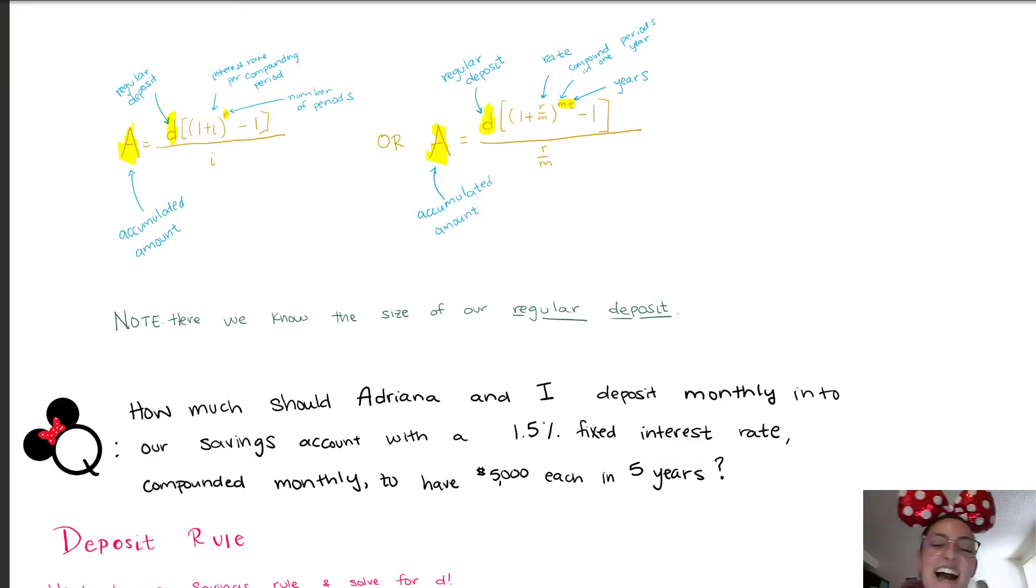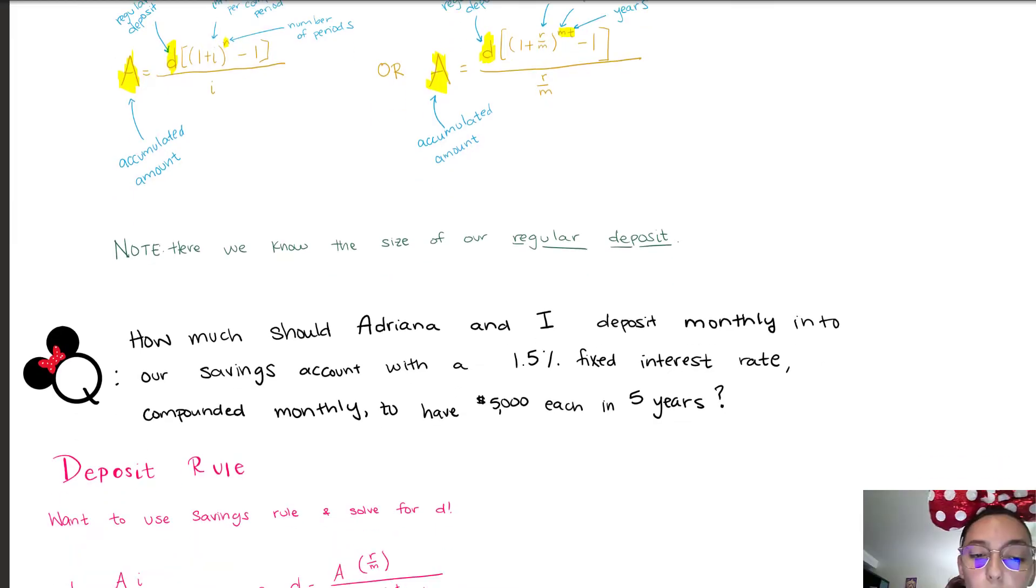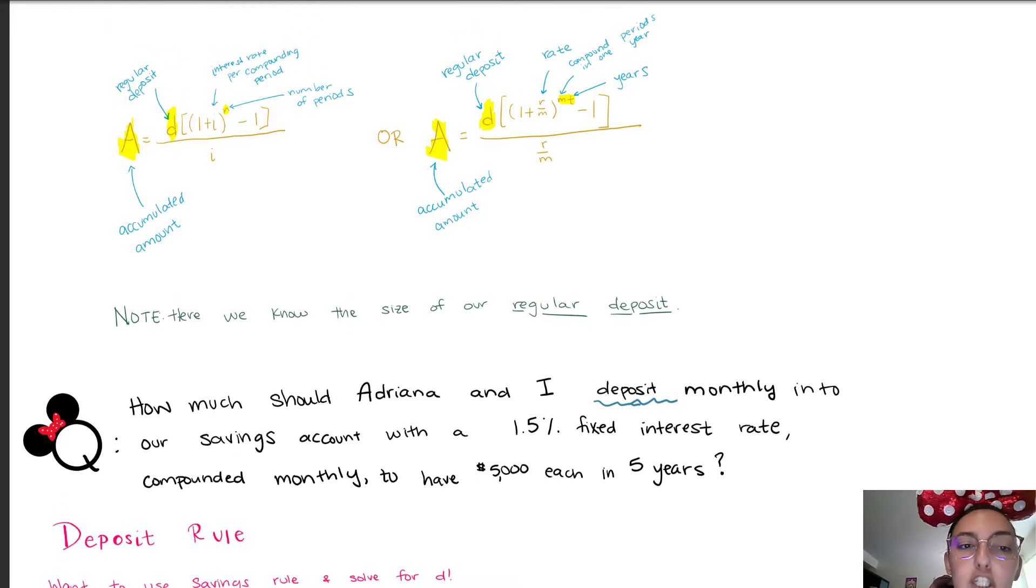With Schools First at a 1.5 fixed interest rate compounded monthly, so that we each have $5000 to go to Disney World in five years. We already have annual passes for Disneyland. Notice what we're doing here, we're looking to see how much we should deposit. This calls for a deposit rule.